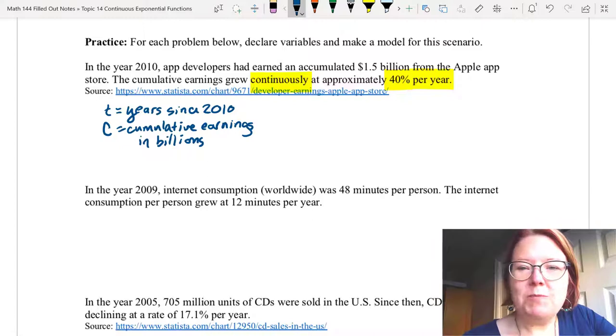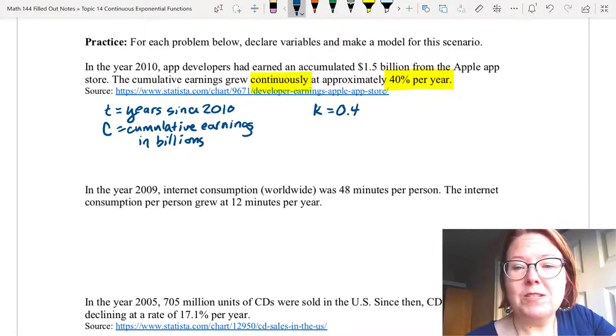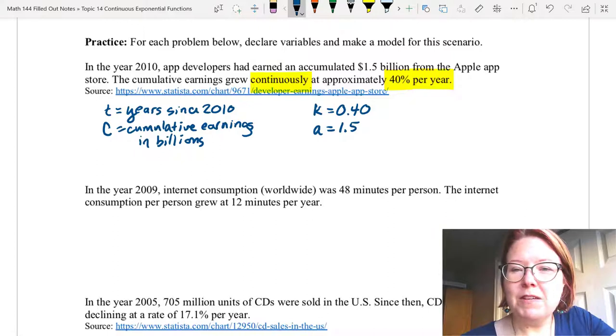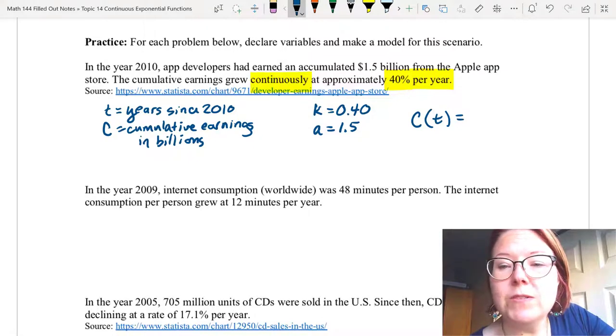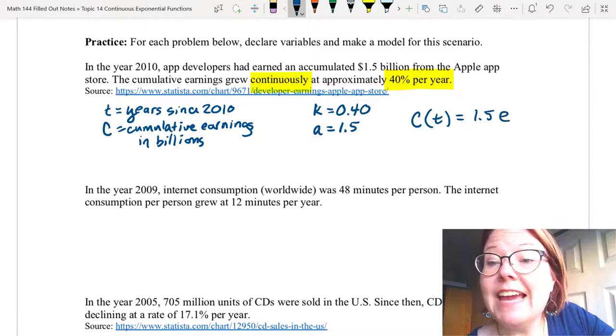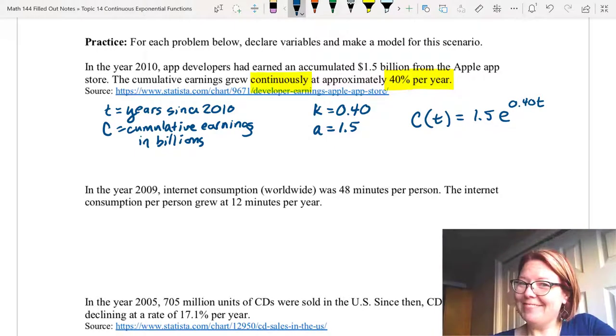What else do we know in this problem? We know that the K value is going to be 0.40. That's an increase of 40% a year. We know that the initial value is 1.5 for 1.5 billion. And we should now be able to make a model. That's C(t) equals 1.5 times e^(0.40t). Hopefully you got that one.